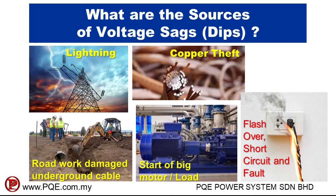What are the sources of voltage dip? Voltage dip could be caused by: lightning strike on the power lines; copper cable theft where someone cuts an in-service copper power cable; start of a big load on a power system causing an internal voltage dip; road work which accidentally damages underground cable; and flashover, short circuit, and fault.